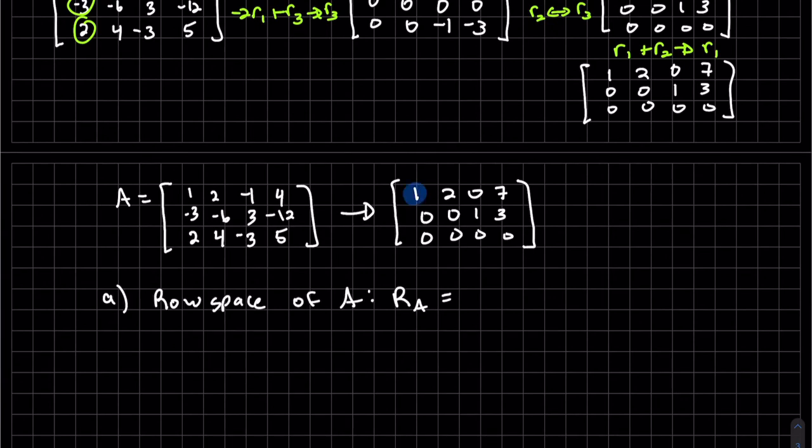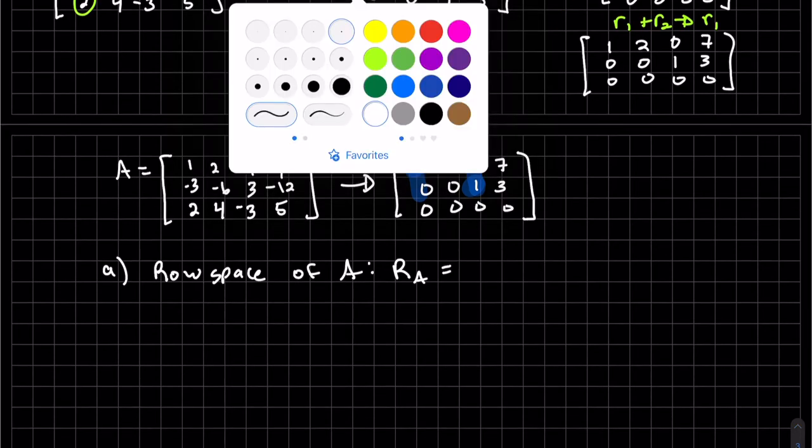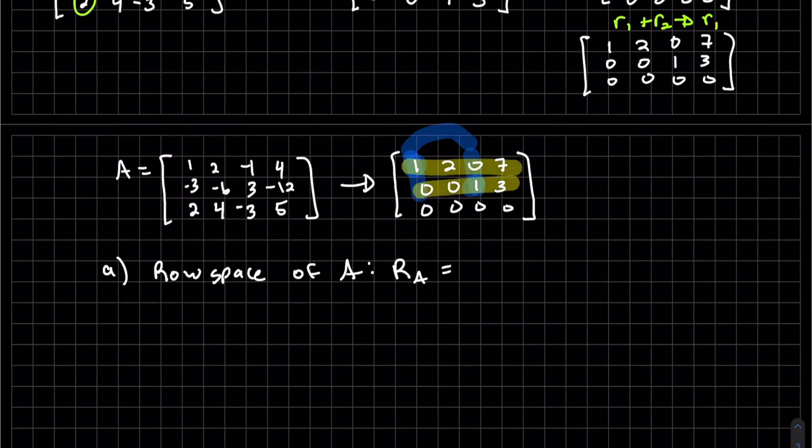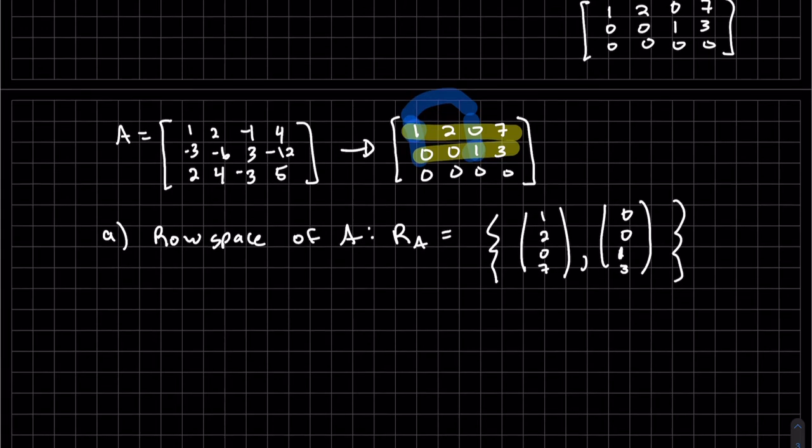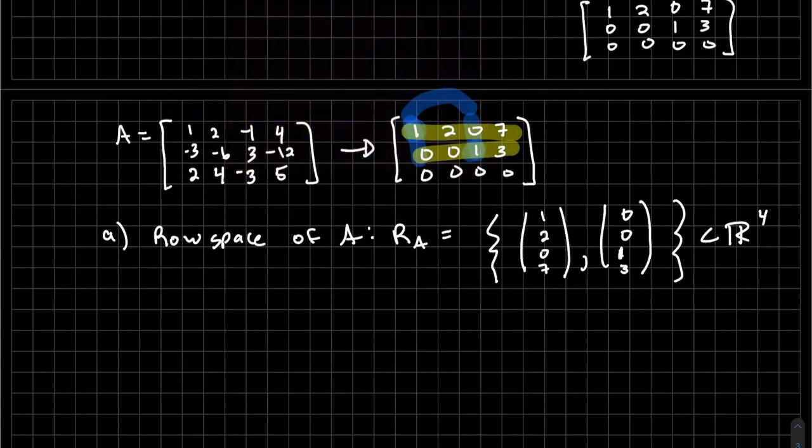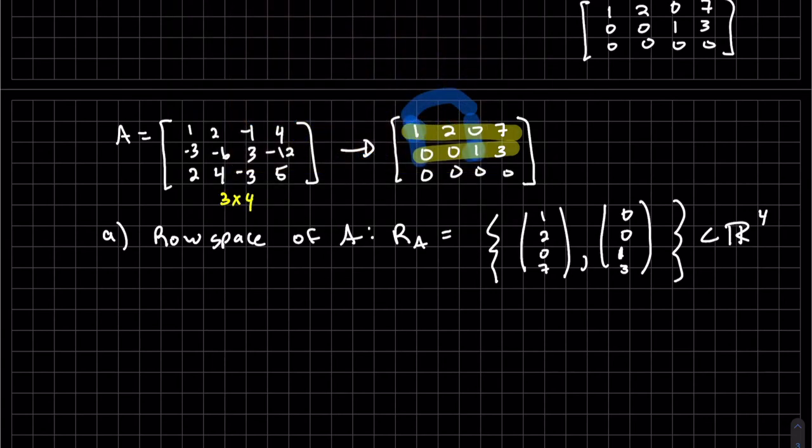So our row space, again, is going to be this row and this row because they have these pivots in them. So it's the row with the pivots. The pivots, by the way, can make this identity matrix, 1, 0, 0, 1. See that they're independent. So it is the first two rows and you write them as a vector. And we can see this is a subset of R4. This is a 3 by 4.